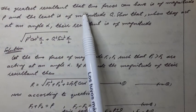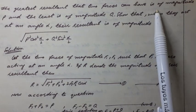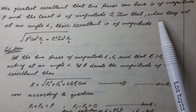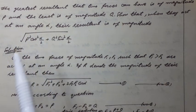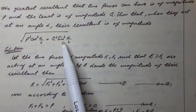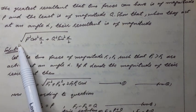Question. The greatest resultant that two forces can have is of magnitude p and the least is of magnitude q. Show that when they act at an angle alpha, their resultant is of magnitude square root of p squared cos squared alpha over 2 plus q squared sin squared alpha over 2.